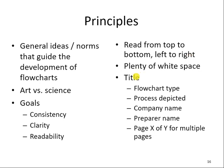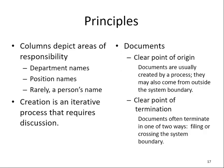Titles are important. For each column, we're going to show department names, position names, or even a person's name to show their responsibility. Also for documents, we're going to show a clear point of origin and a clear point of termination. Documents often terminate in one of two ways: filing, where they are stored in storage, or they move across the system to another organization — we use a terminal to show those crossing the system boundaries.